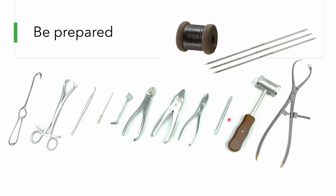When planning for tension band wiring, the following instruments should be ready: large and small bone hooks, a bone clamp, pliers, K-wire guides, a drill bit, a wire impactor, a hammer, SS wire, and K-wires.